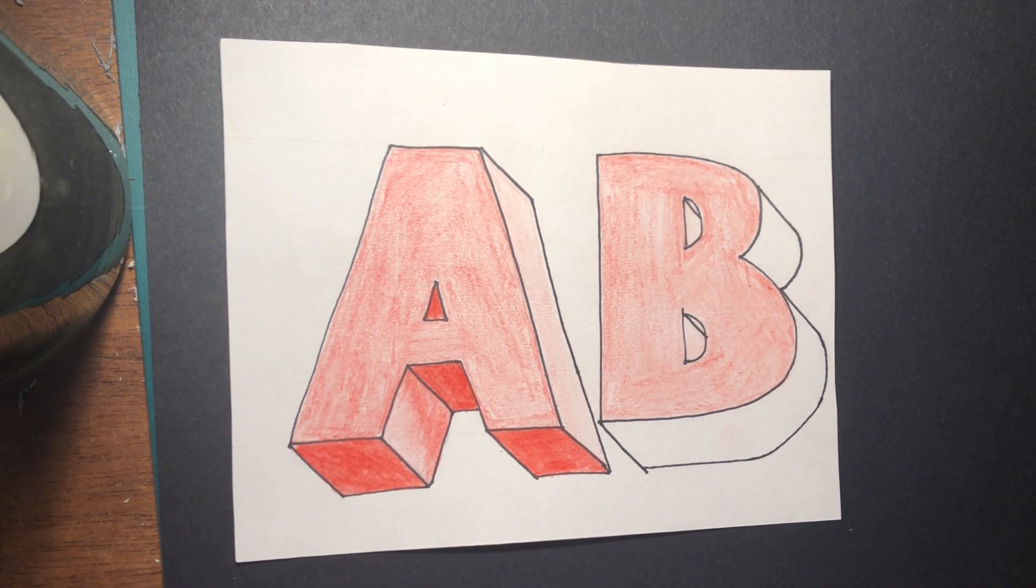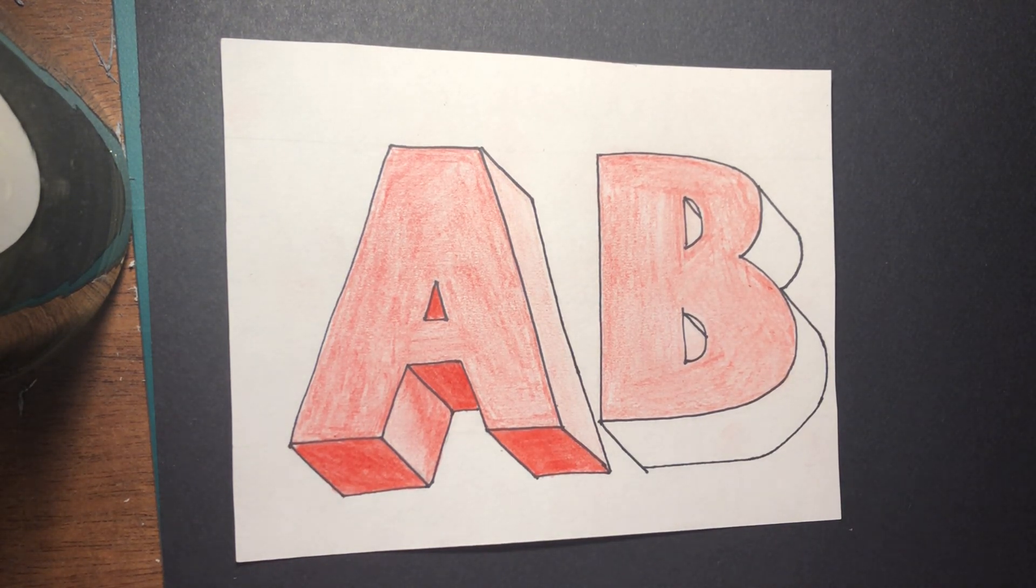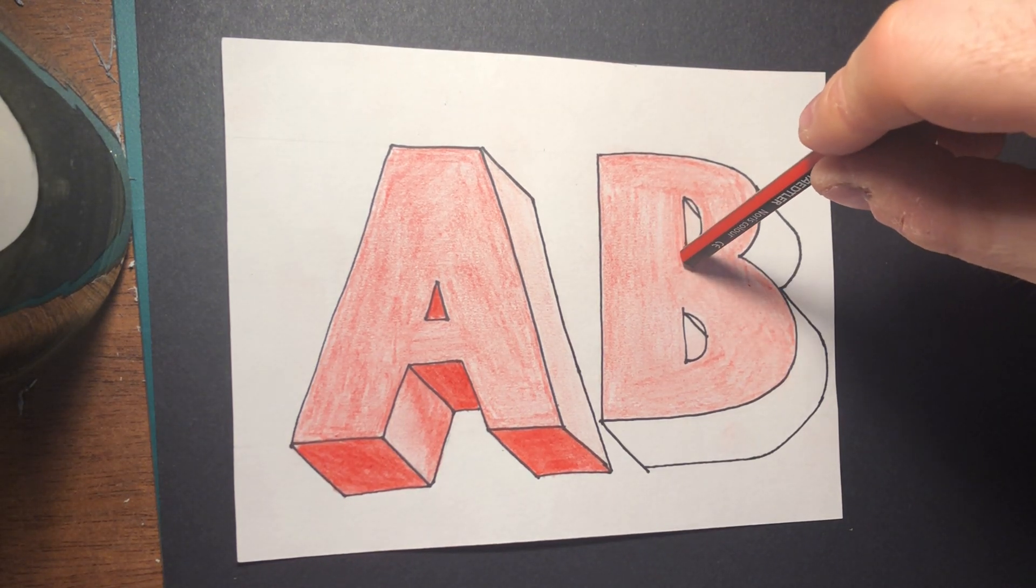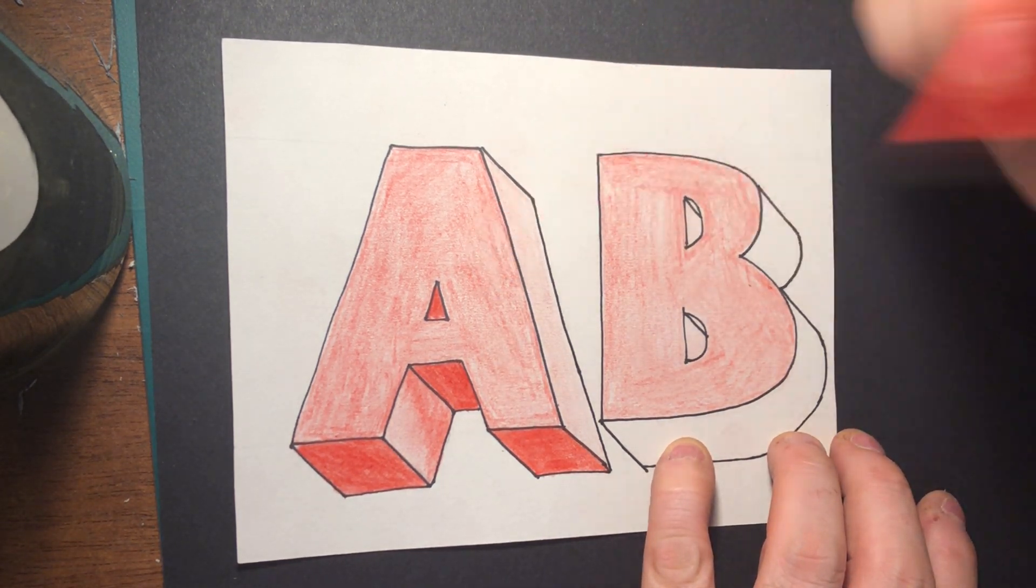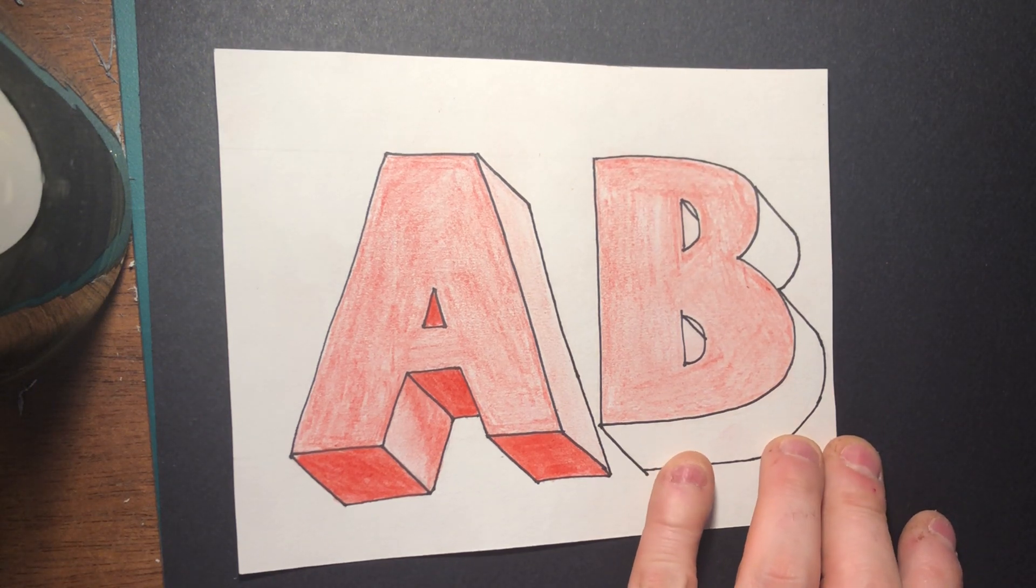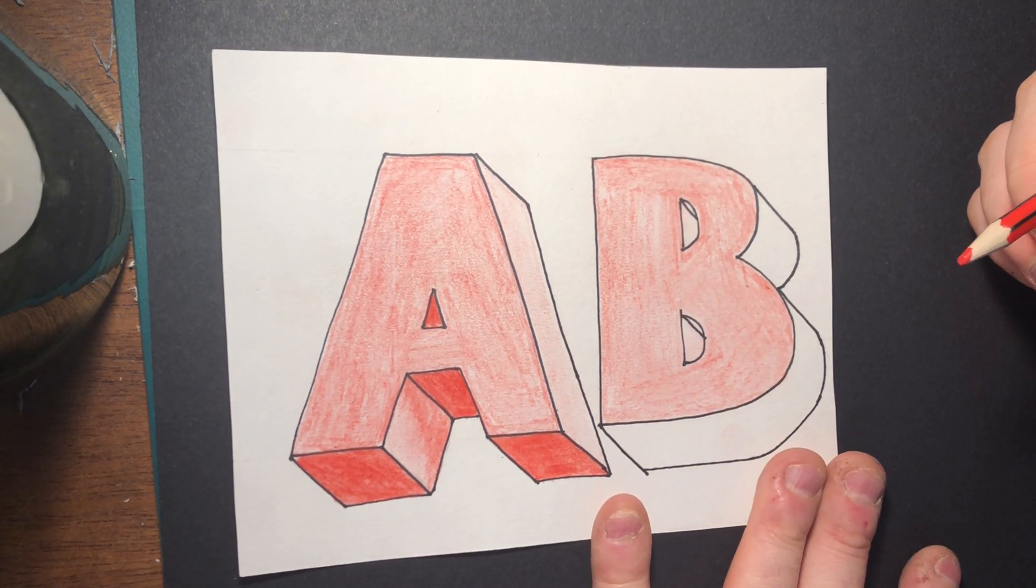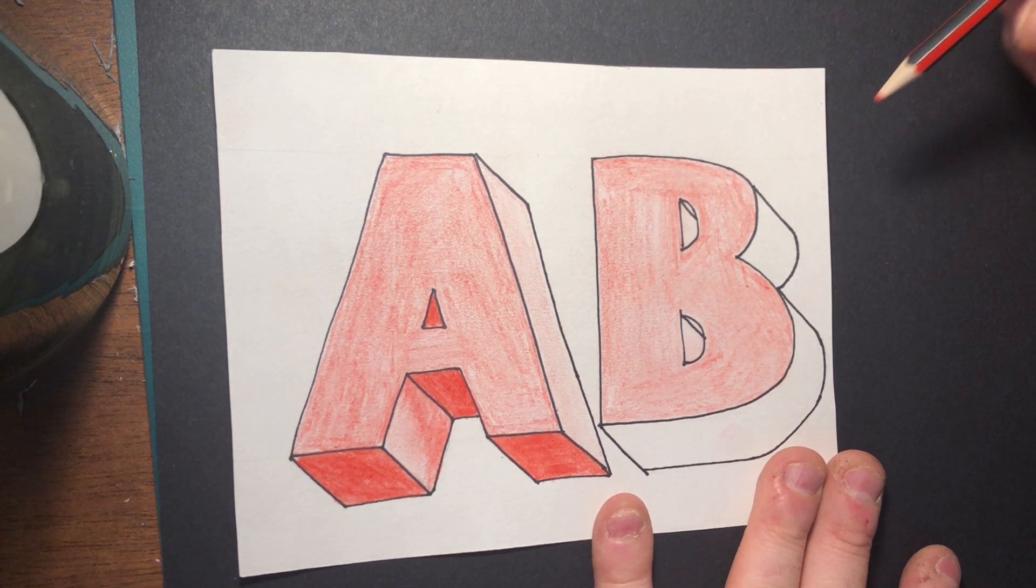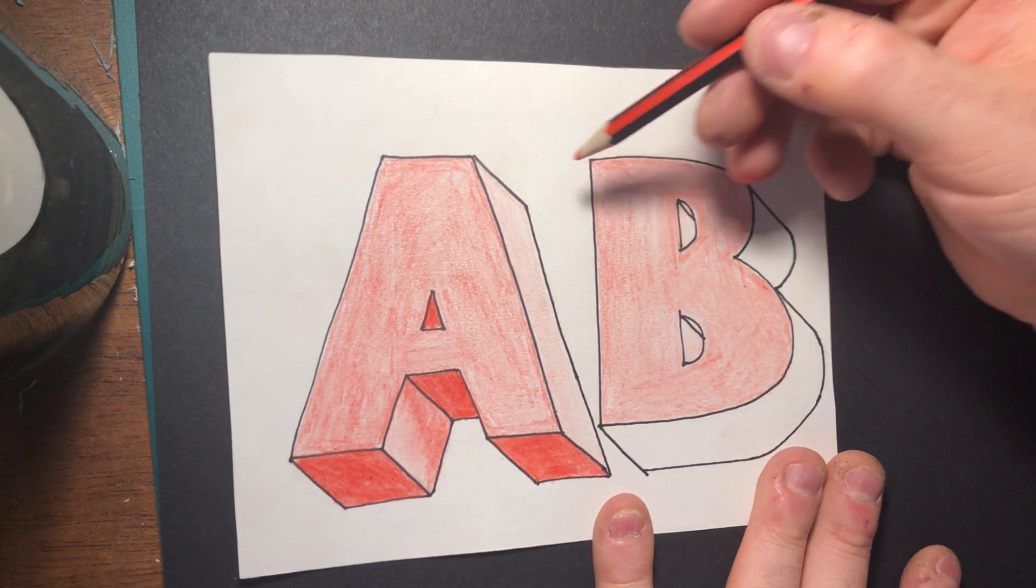Okay, welcome back. This is the final part. So at the moment I have colored in my B with the same main color as the front, the mid tone, and now I want to think about shadowing.